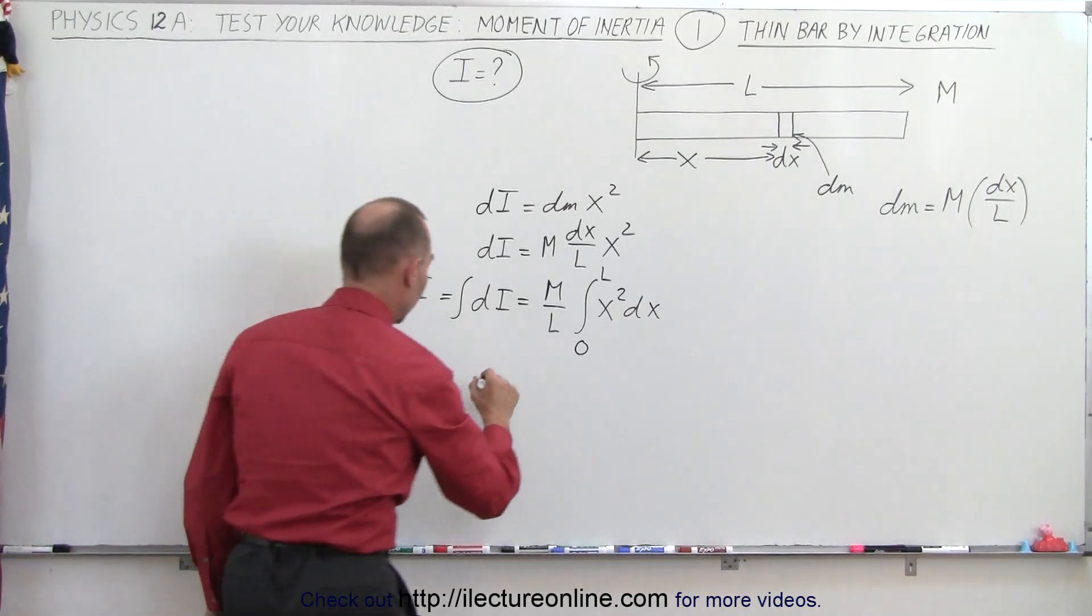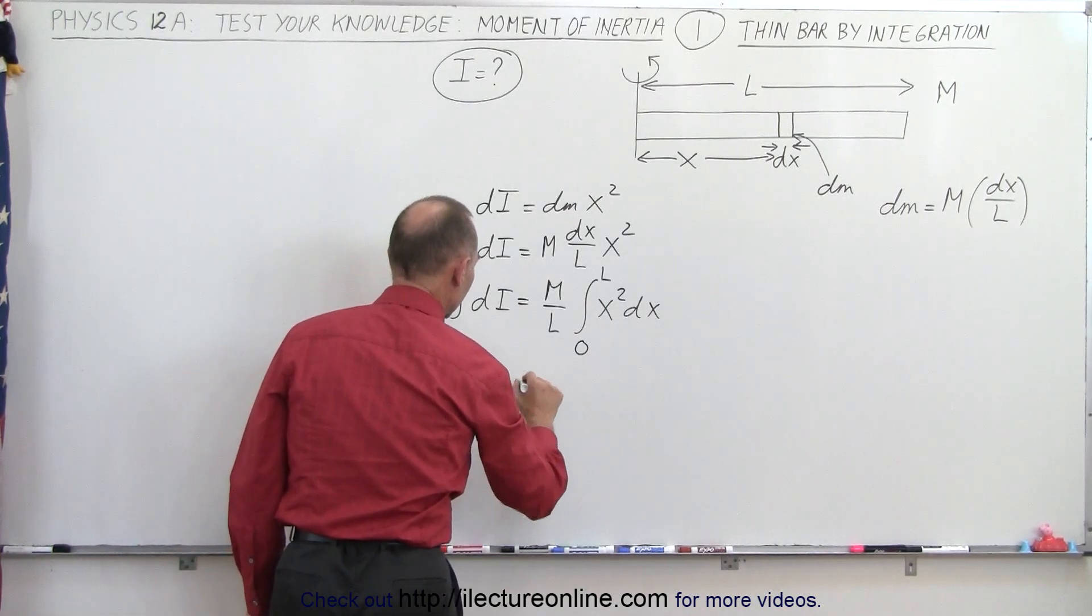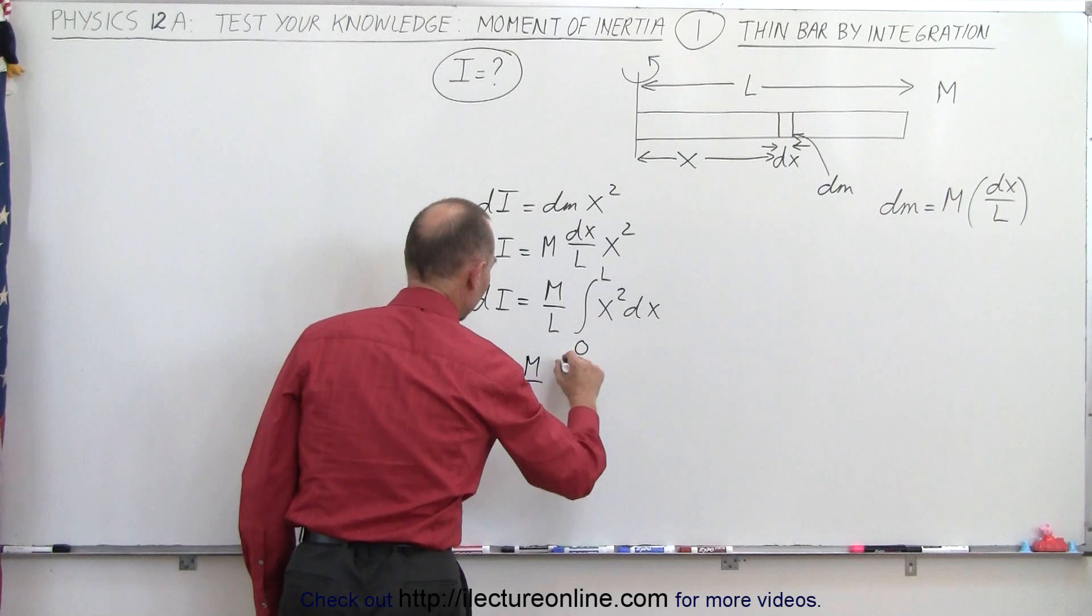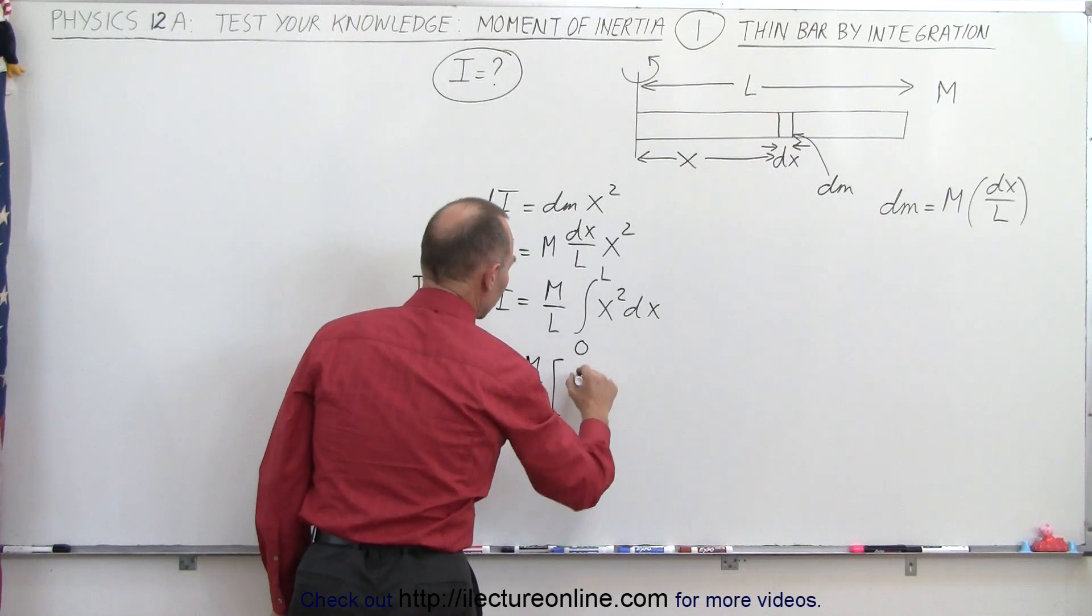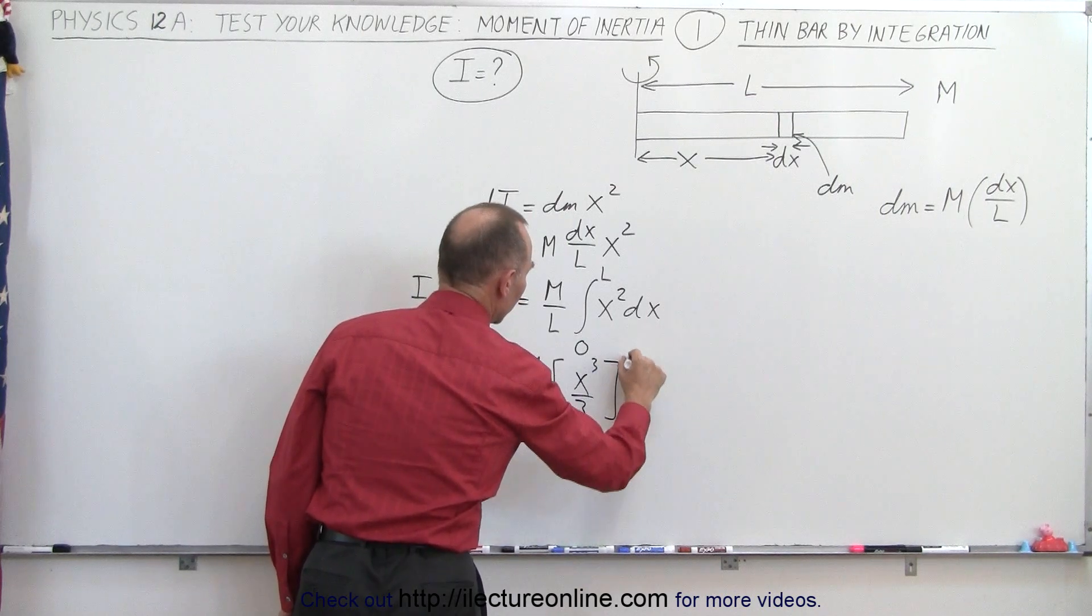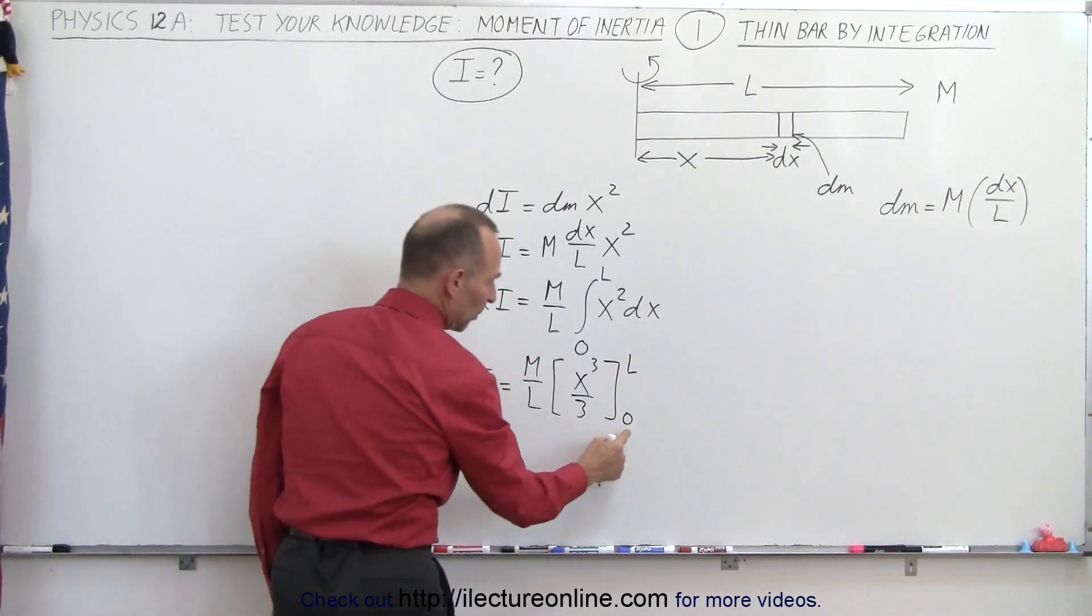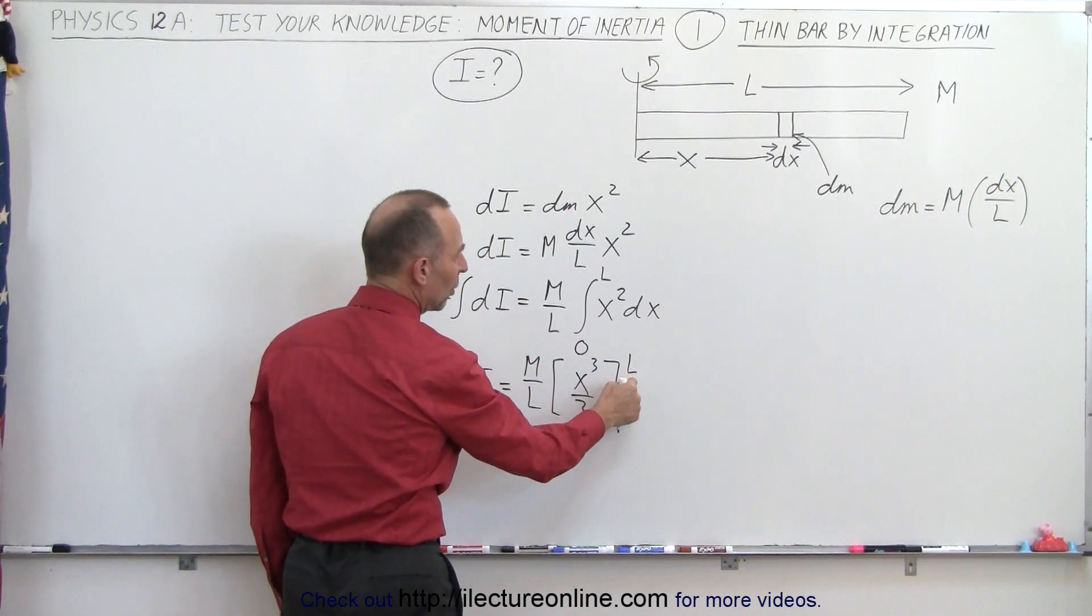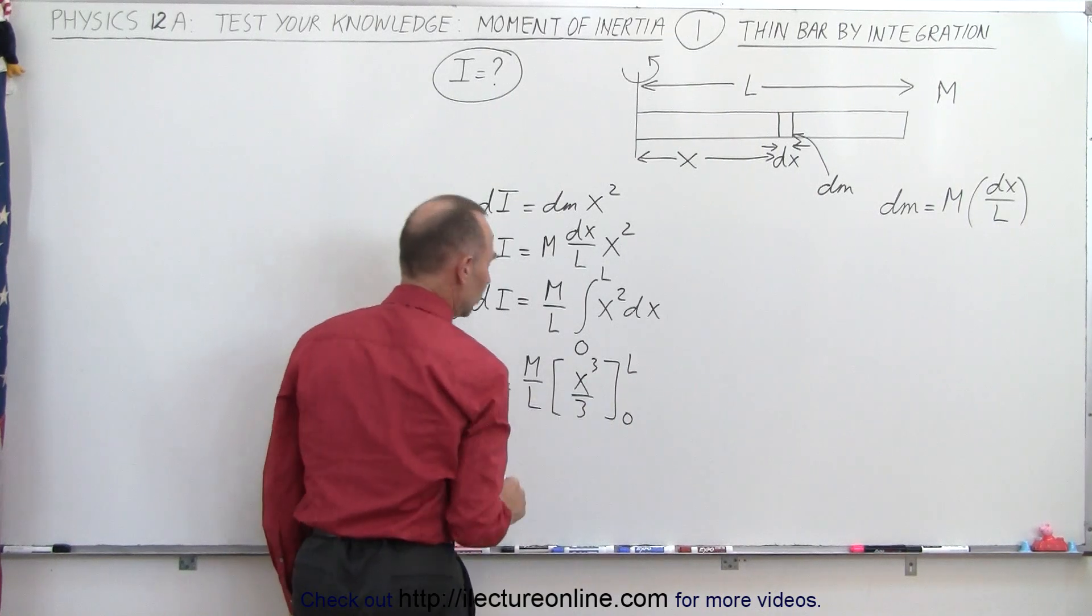So now we go ahead and do that. So we get the moment of inertia is equal to M over L times the integral of x squared is x cubed over 3, and we're going to evaluate that from 0 to L. Now of course when we plug in the lower limit, we get 0. When we plug in the upper limit, we get L cubed.